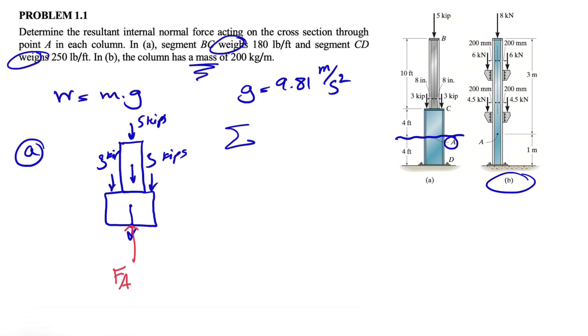We're going to do sum of all forces in y direction equals zero. This will be our positive direction. So we have FA minus five minus three minus three.